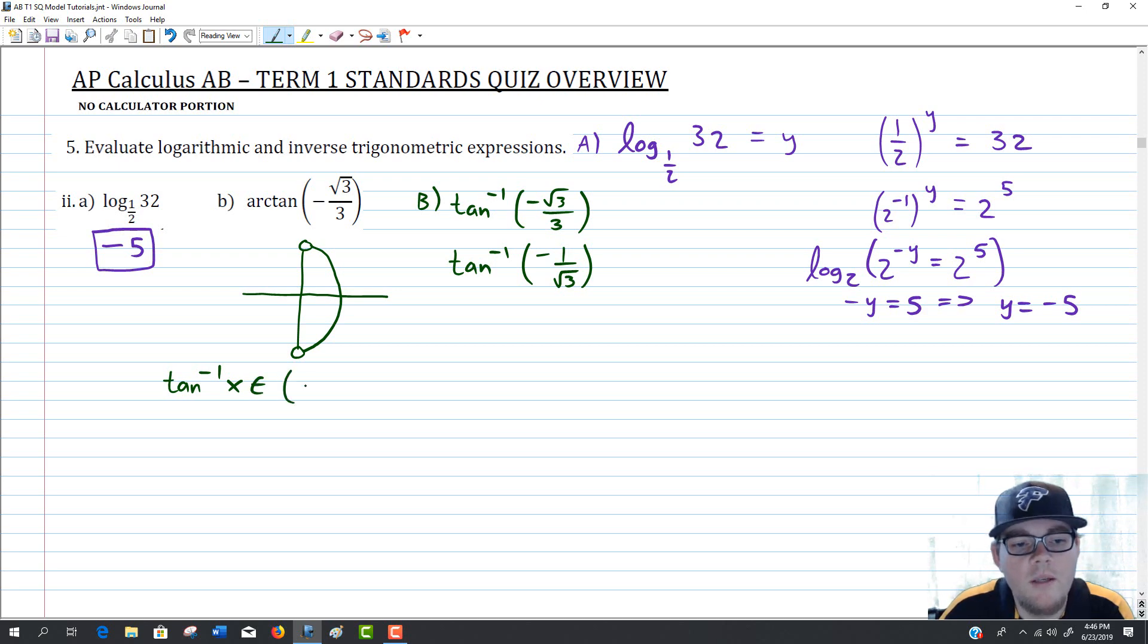Once again, there is a range restriction built into arctangent or inverse tangent. We're in the same two quadrants as we were before with inverse sine. But the difference is, for inverse tangent, we're going to be between negative pi over 2 and pi over 2. Now keep in mind, even though it is open brackets, that means we don't include negative pi over 2 and pi over 2. In that case, the tangent value would be positive or negative infinity. For our purposes though, since we're between negative pi over 2 and pi over 2 and tangent is negative, we want to focus our illustration in quadrant 4.